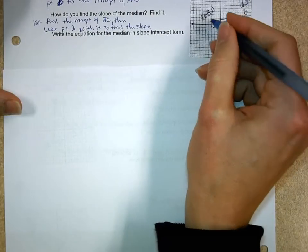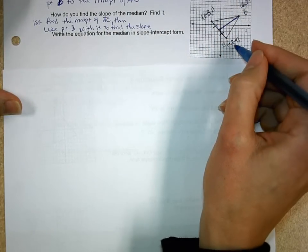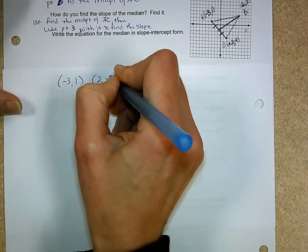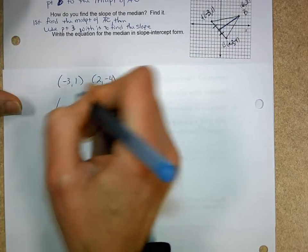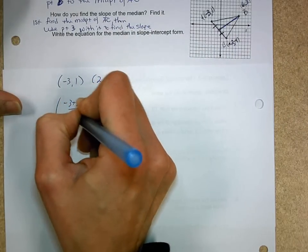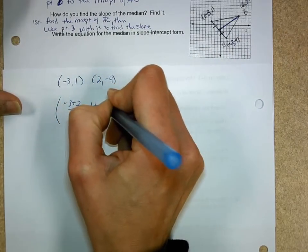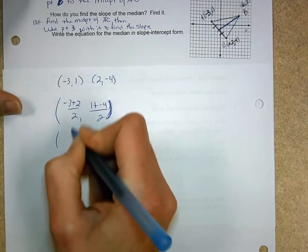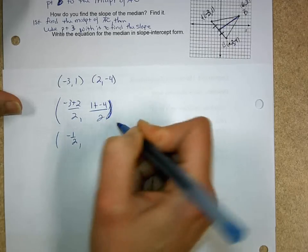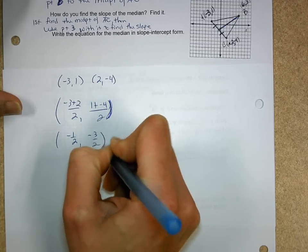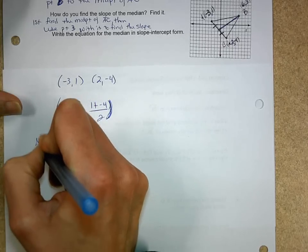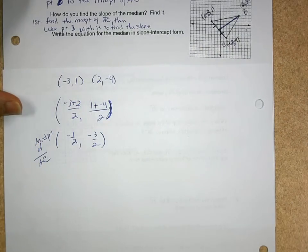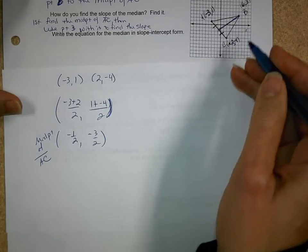First, find the midpoint. So here are my points, (-3, 1) and (2, -4). Midpoint is the average of the x's and the average of the y's. So what do we get here? (-1/2, -3/2). So that's the midpoint of segment AC. Now I have to find the slope because I'm going to use point B with it.